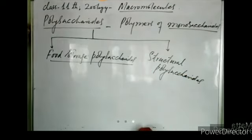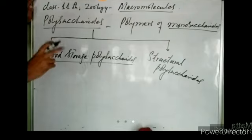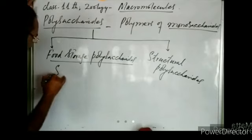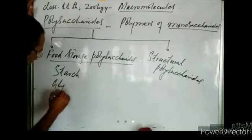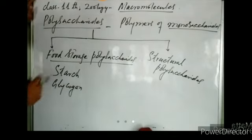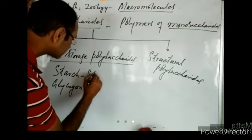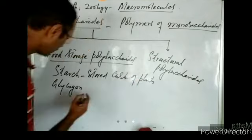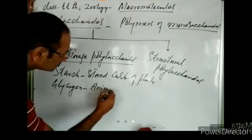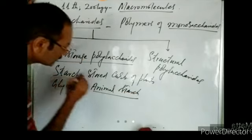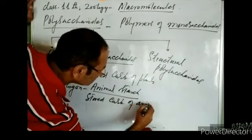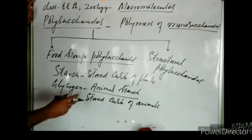Food storage polysaccharides are those polysaccharides which serve as stored food in plants and animals. They include starch and glycogen. Starch is the stored carbohydrate of plants, while glycogen is also known as animal starch because it is the stored carbohydrate of animals. Glycogen in animals is stored in the liver.